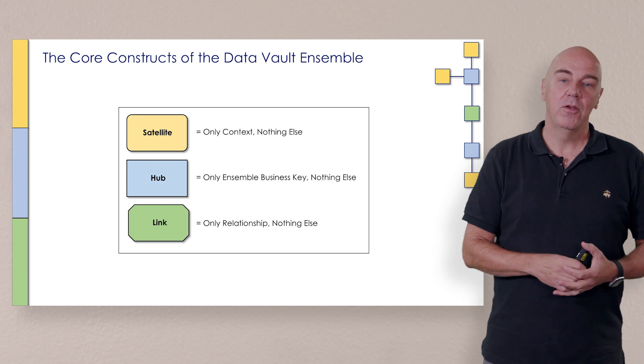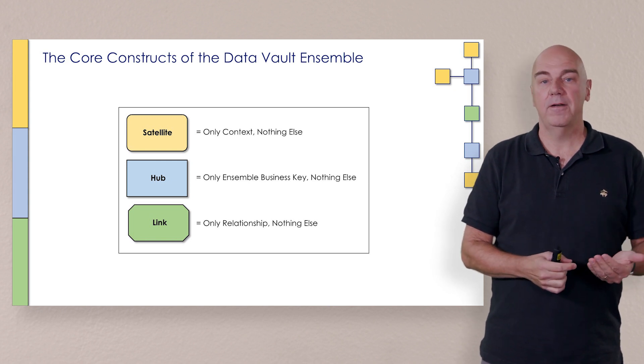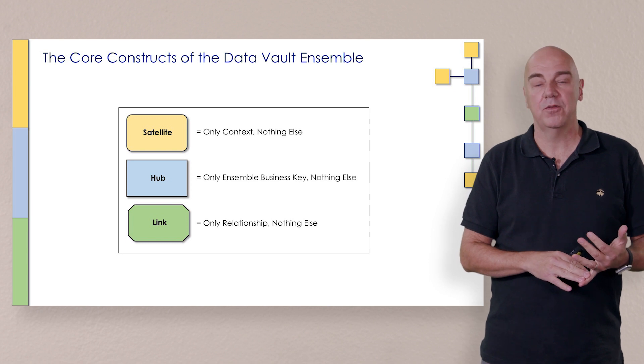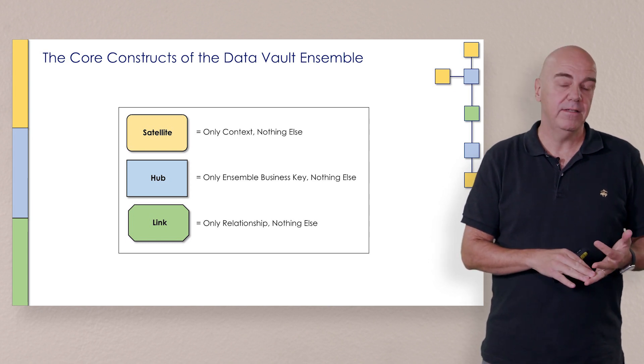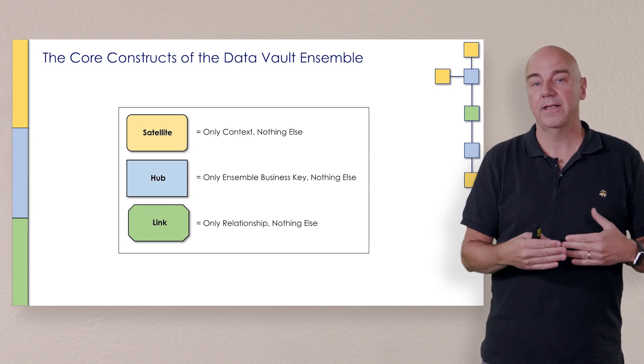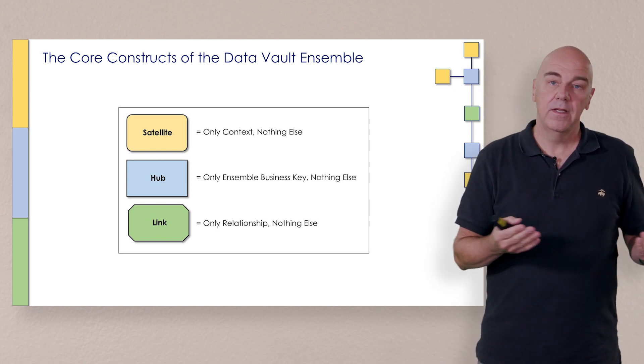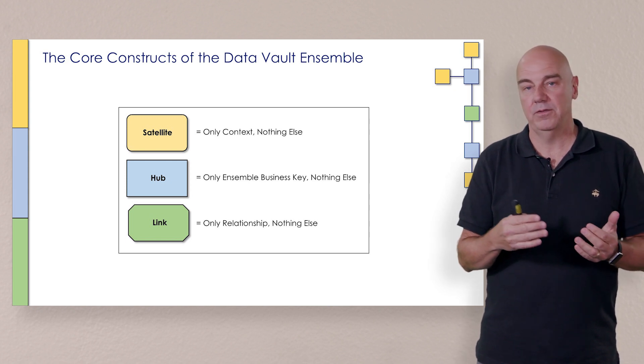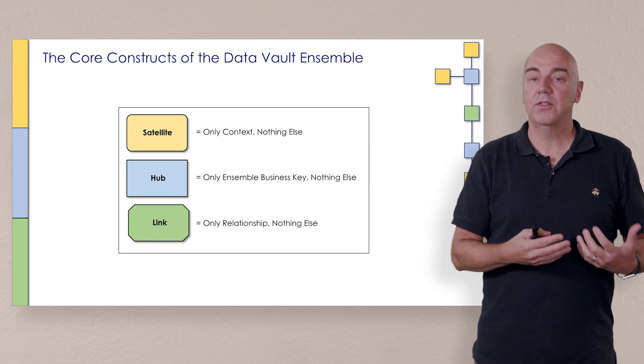Same thing here. When we're looking at the satellite, it's only context. There can't be any relationships coming to and from it. There can't be any keys embedded in it. It's just context describing a particular hub. Hubs can't put anything in there to say it's no longer valid. You can't say it looks like this. Nothing to describe it or relate can be embedded in the hub.